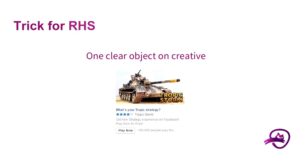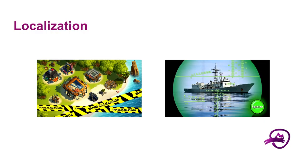The trick for the right-hand side is to use one clear object. Maybe because of peripheral vision, users with small images pay more attention to clear and prominent objects. And one more thing about creatives — you need localization. We always use localized text and calls to action, and images with specific language targeting in different countries work better.